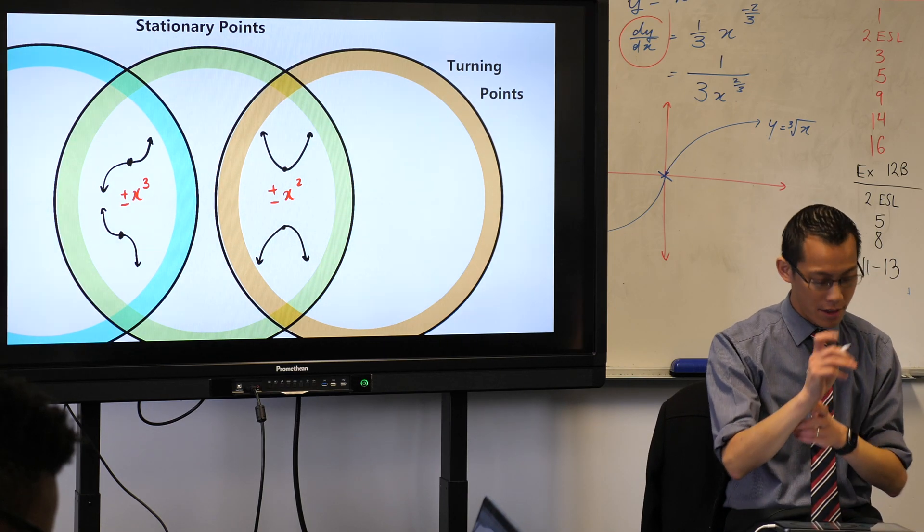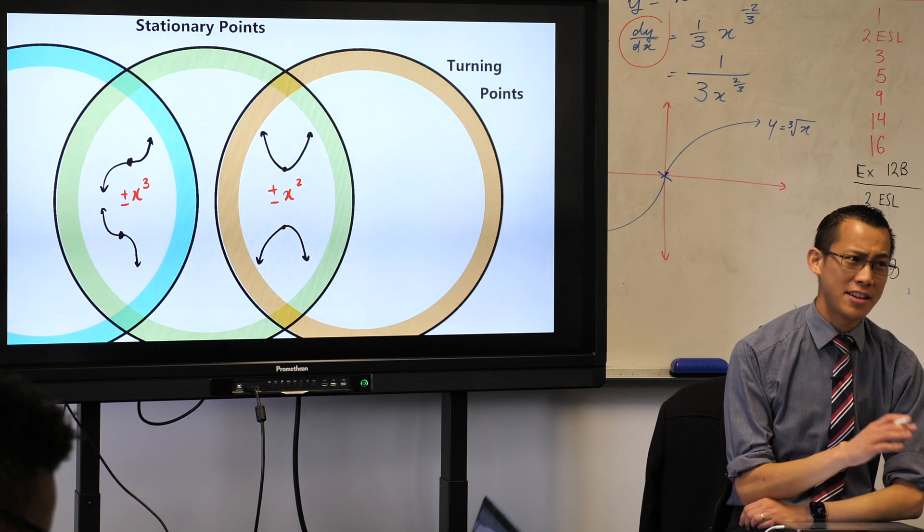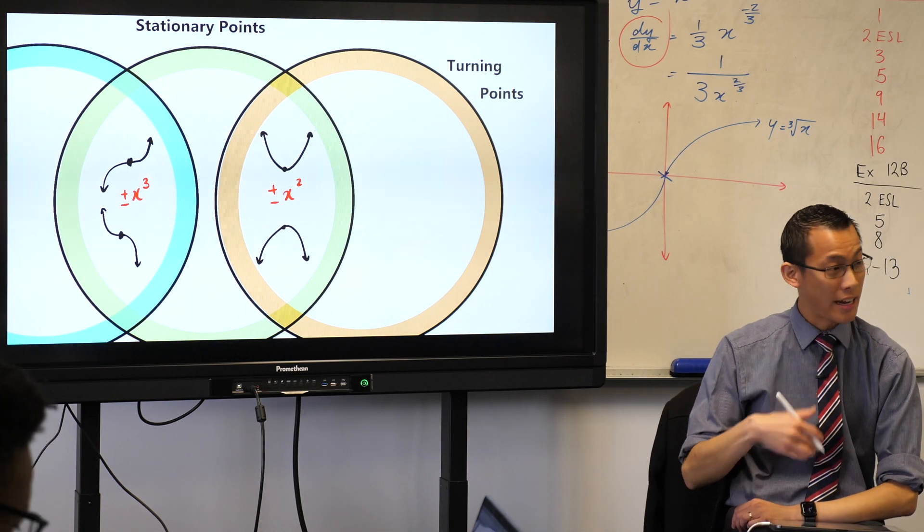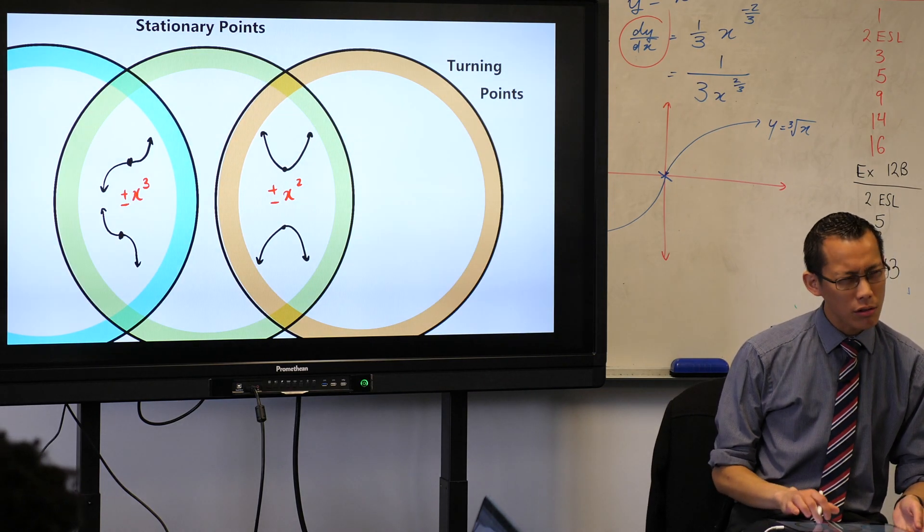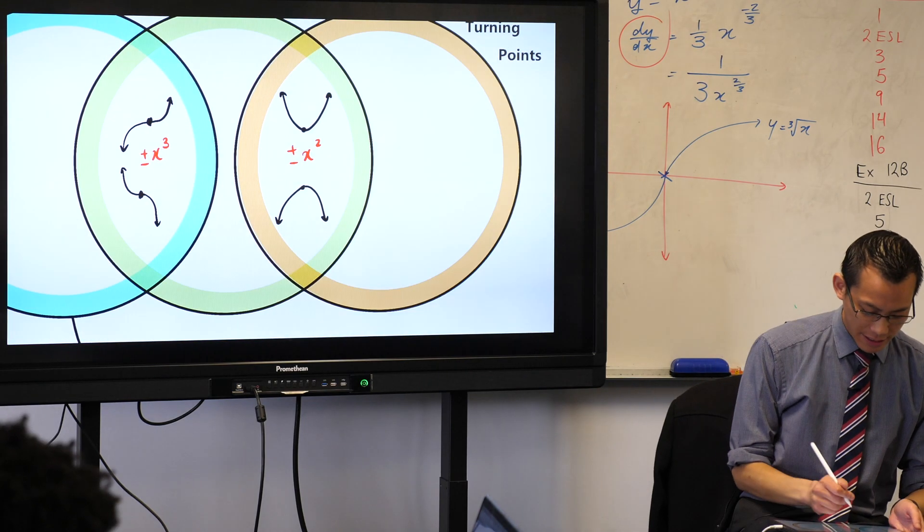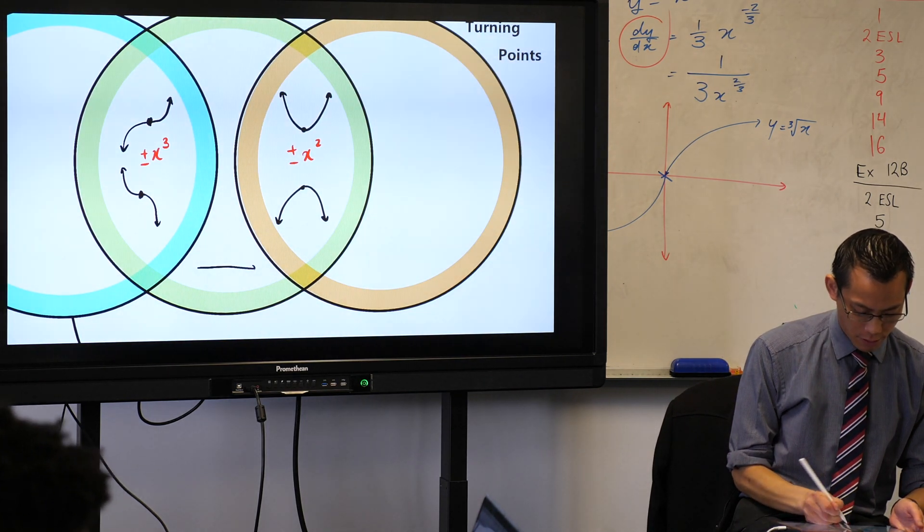Now, there is one other example, which is, there are some really boring functions that they're just stationary all the time, and we actually drew one in our previous table. What would it look like if a function was always stationary? The answer is, it's a linear function. Well, it's just a horizontal line.